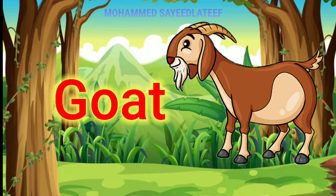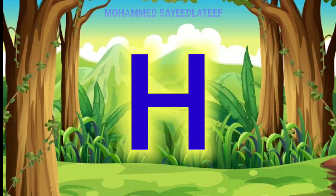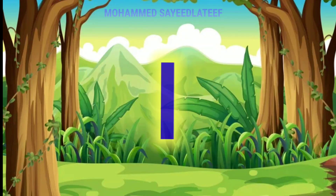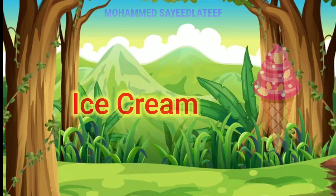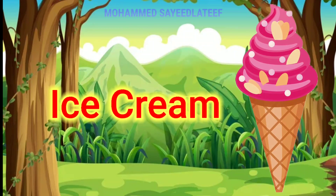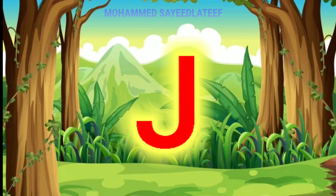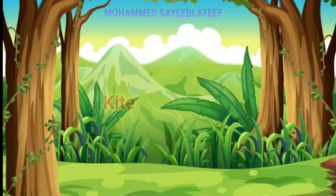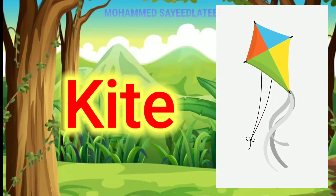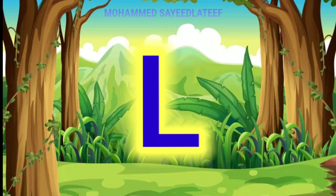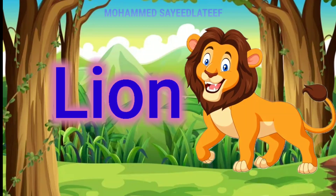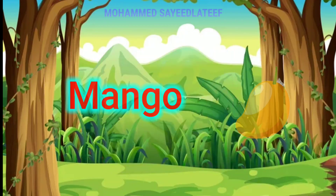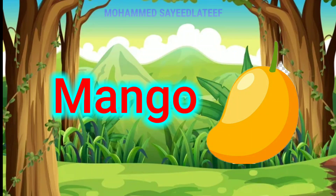G for boot, H for hen, I for ice cream, J for jug, K for ki, L for lion.